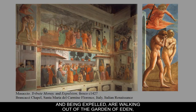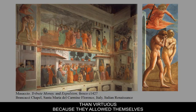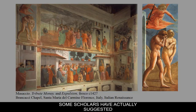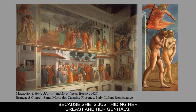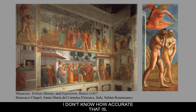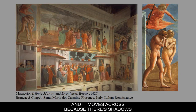Even though these figures are in shame and being expelled, they are walking out of the Garden of Eden with idealized, almost perfect physical forms. They represent the primal ancestors and they possess kalos — beautiful bodies — even though they were less than virtuous because they allowed themselves to be tempted. Some scholars have suggested that Adam is truly repenting and ashamed, hiding his face, while Mary is just embarrassed and hiding her body. I don't know how accurate that is, but it's one theory. Notice also the raking light and shadow — the chiaroscuro — traceable from the upper right-hand corner, with shadows on the left-hand sides of the figures.